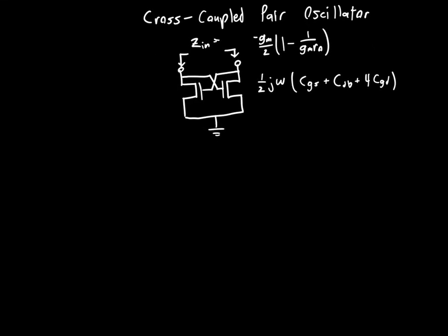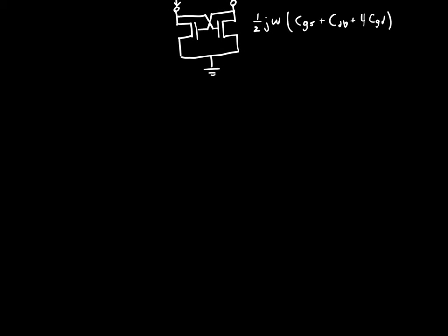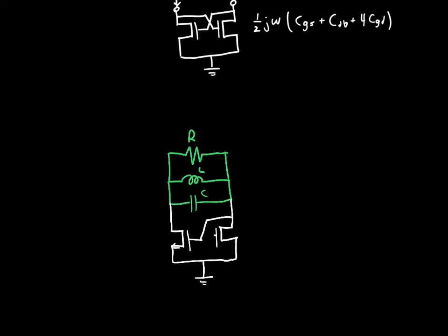If we just take the naive approach, which is where we're going to start from, let's just connect an RLC circuit up top. We've got a value R, an inductor L, and a capacitor C. And then we've got our cross-coupled pair, so we just connect it like this. That is our oscillator. The only problem is that it does not work.